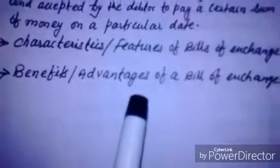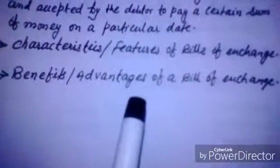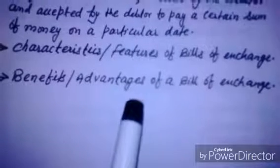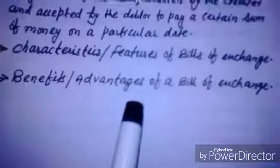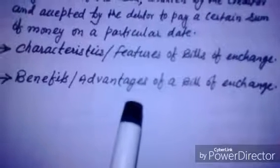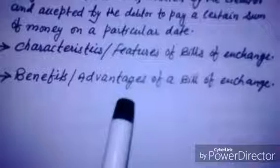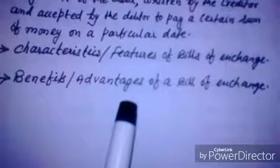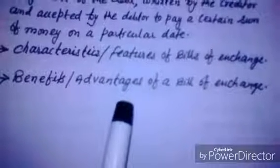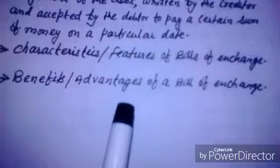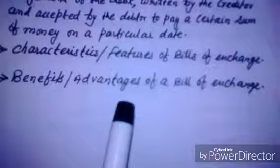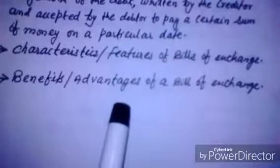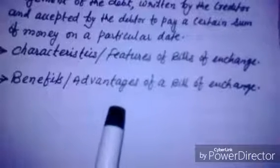A bill of exchange is a negotiable instrument, so it can be transferred from one person to another in settlement of debt. It provides an easy way of sending money from one place to another. It brings certainty of payment on both sides — for the debtor and the creditor — because of the fixed date of payment. A foreign bill of exchange facilitates foreign trade considerably.